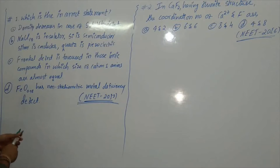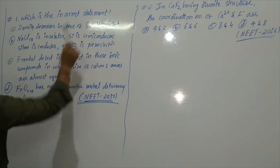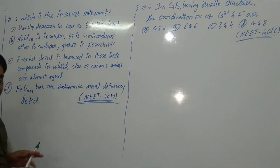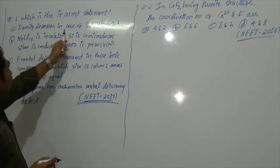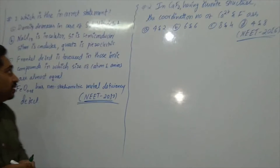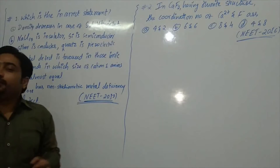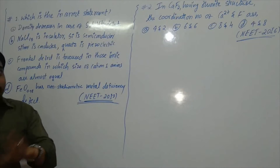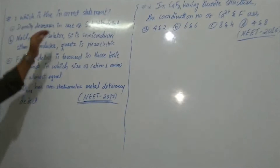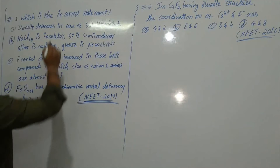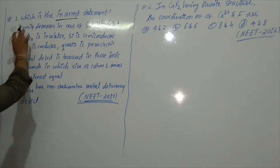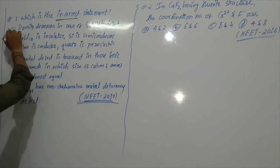The first statement says density decreases in case of Schottky defect — this is correct. Schottky defect means equal numbers of cations and anions are removed from the crystal, so the density decreases. This is a correct statement, so option B will not be the answer.